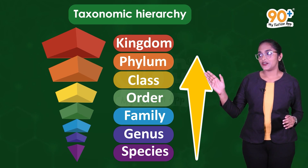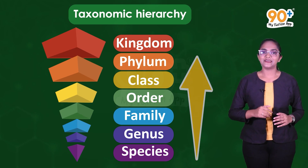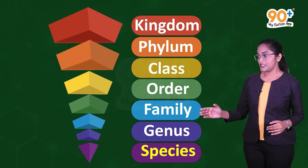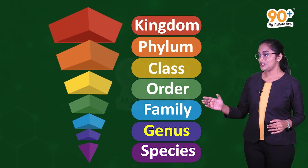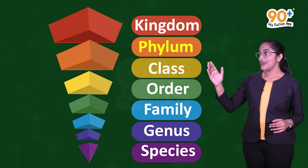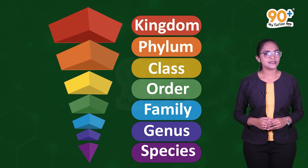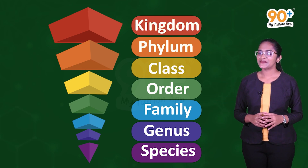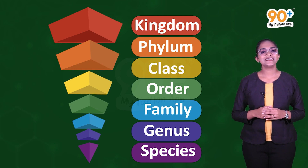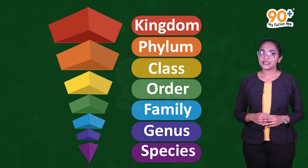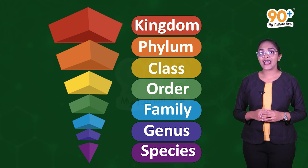So, species, genus, family, order, class, phylum, and kingdom are the categories. But how were these categories made? It is through the taxonomic studies of all organisms. Organisms with similar characters will be included in the same category.